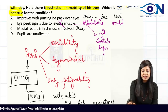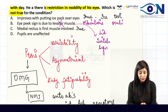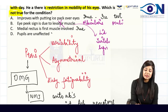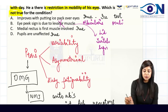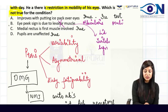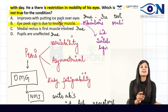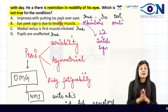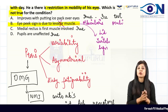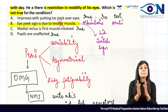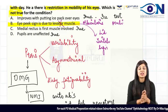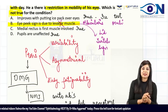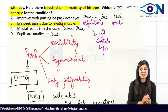To summarize: medial rectus is the first muscle affected — true; pupils are unaffected — true. Therefore, the answer to this question is B — eye peek sign is due to the levator muscle — which is wrong. I hope you've understood this very important integrated topic combining medicine with ophthalmology, looking at the ocular aspects of myasthenia gravis. Happy ophthalmology!